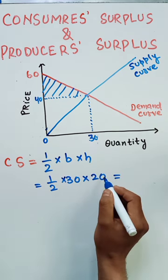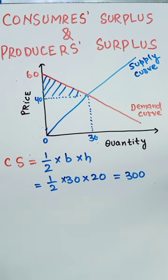Which comes out to be, 3 times 2 is 6, 600 divided by 2, which comes out to be 300. 300 will be the consumer surplus.